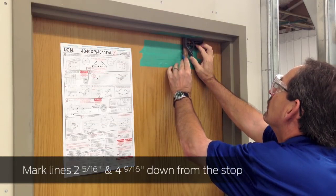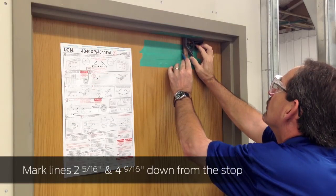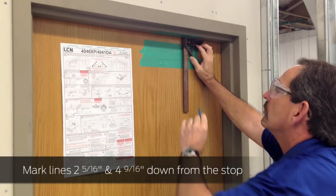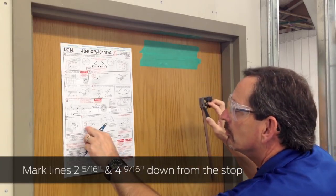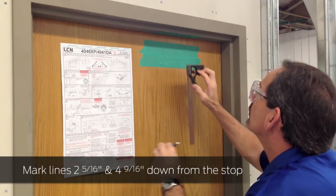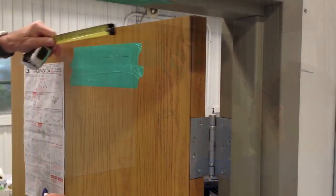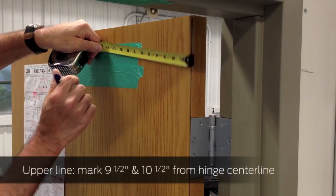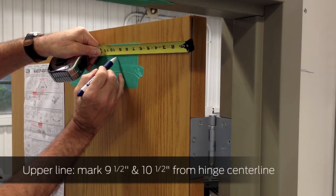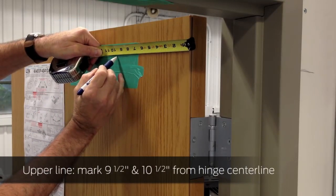Close the door and use a T-square to mark a line 2 5/16 inches down from the stop. Mark a second line 4 9/16 inches down from the stop. On the upper line, mark spots 9 1/2 and 10 1/2 inches in from the center line of the hinge.